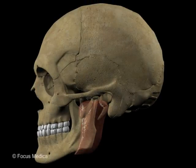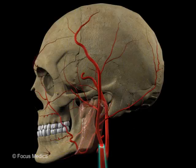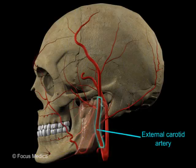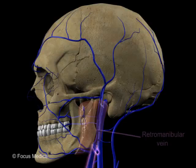In the interior of the gland are the facial nerve and its branches, the external carotid artery and its terminal branches, and the retromandibular vein.